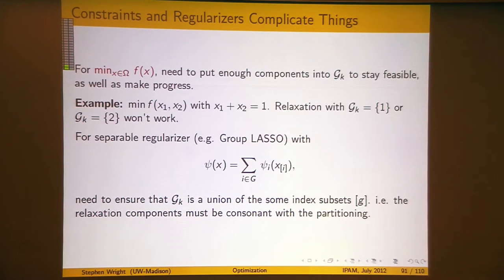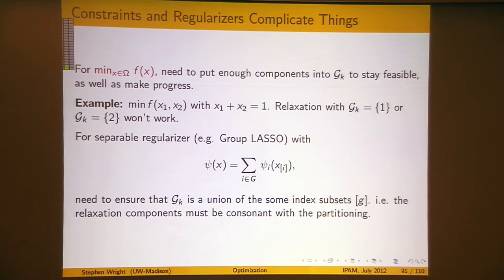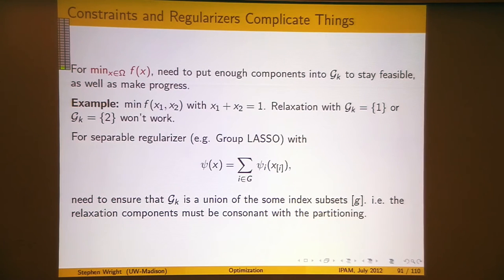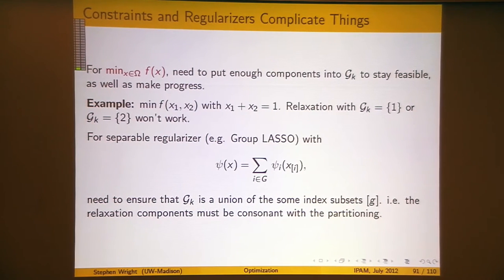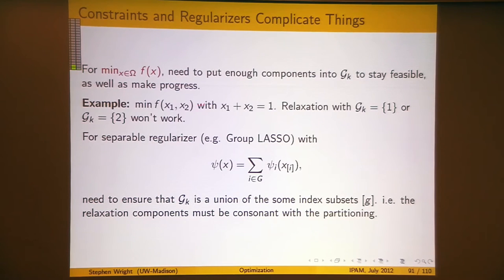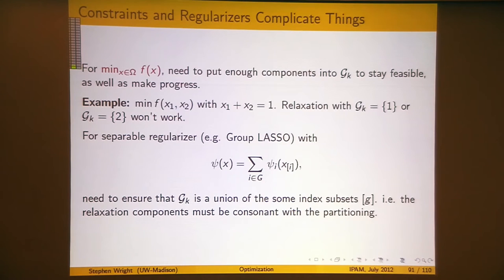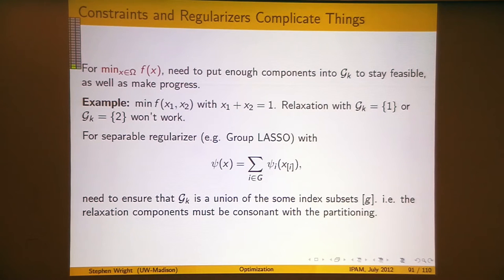There's one issue though: when you start having constraints, in the unconstrained case it's pretty clear how this can work. But when you start imposing constraints on x, it can complicate this strategy. That's very easy to see if you've got a problem in two variables with a constraint that links those two variables — x1 plus x2 equals one. If I try to take a step by only allowing x1 to change, I've got to fix x2.